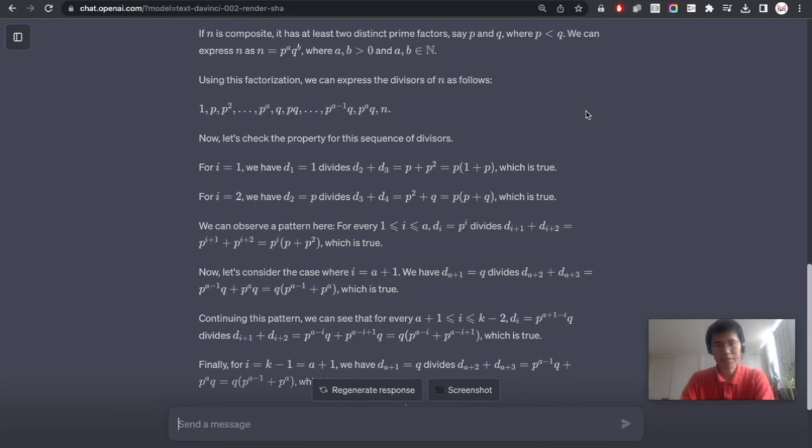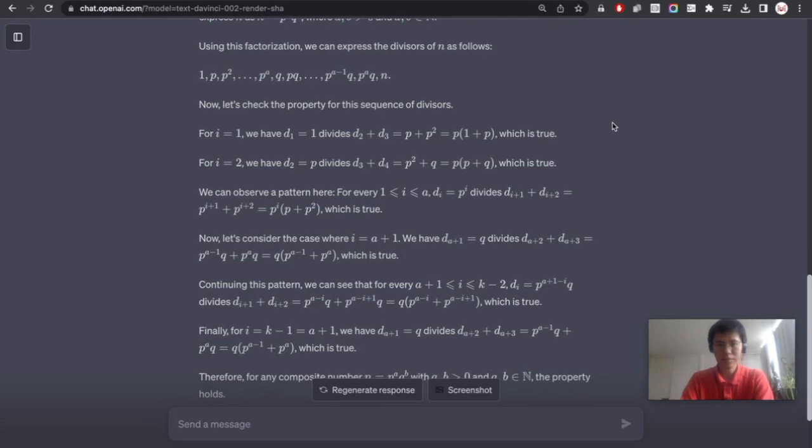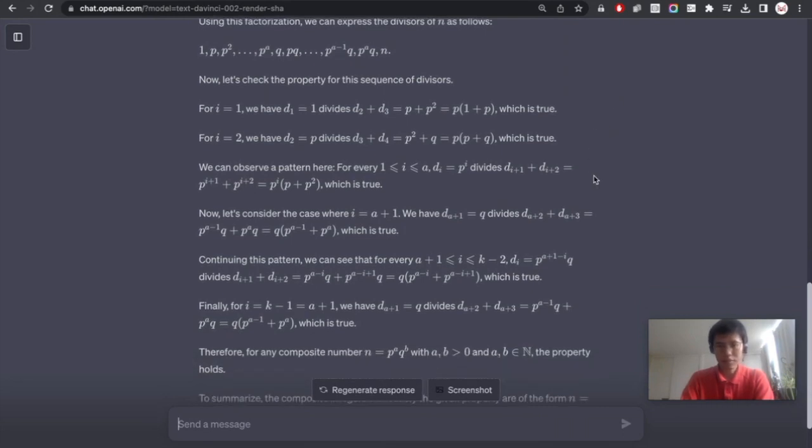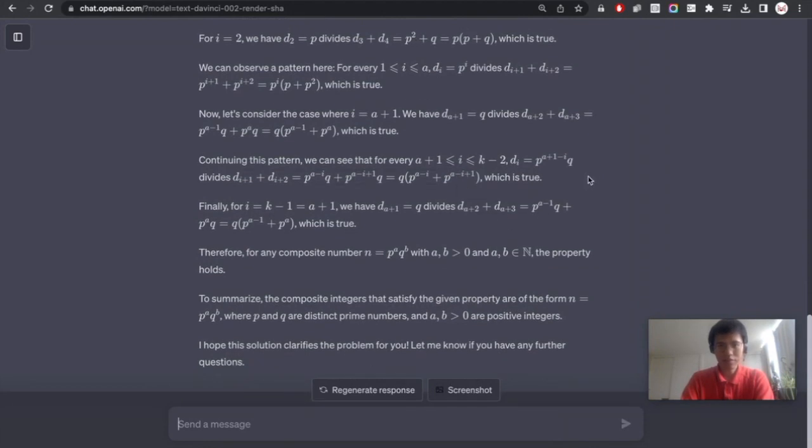Well, this time it is not particularly correct, because it could be that q is smaller than p square, right? But at least it has some good ideas to try to inspect some small cases where we have only two prime divisors and try to analyze whether this could satisfy the condition or not. I wouldn't check very in detail the following argument.